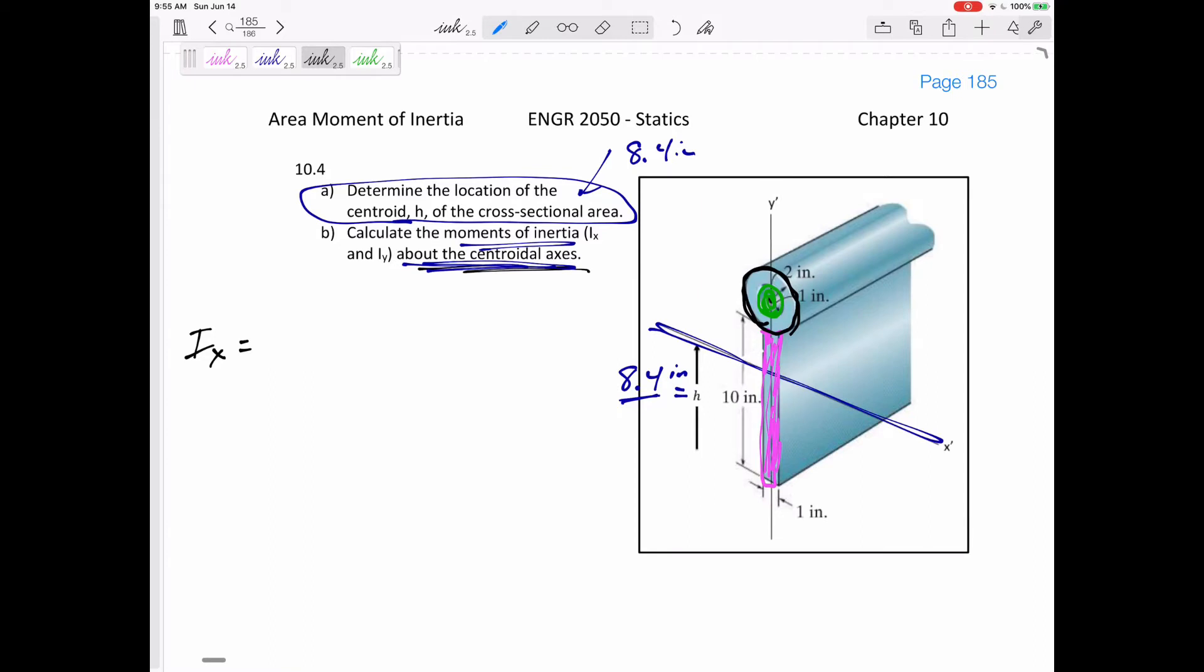All right, so the rectangle is 1/12 B H cubed. That's on our formula sheet if you didn't know it, but that's 1/12 B H cubed is about the centroid of the rectangle. Where's the centroid of the rectangle? Well, the rectangle is 10 inches tall. The centroid is 5 inches from the bottom, but I want the I about this axis, which is 8.4 inches from the bottom, right? So I need to move this from 5 inches to 8.4 inches. I need to move this 3.4 inches. Square that.